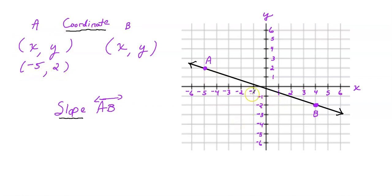Let's look at B. We start at the origin. I need to move four units in the horizontal or x-direction, and then two units down — so that's negative two. The coordinate of B is four, negative two. Hope you got that right.